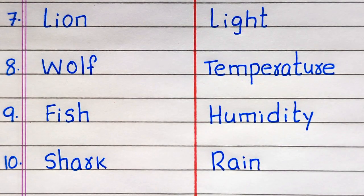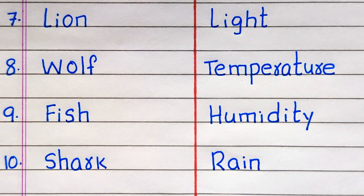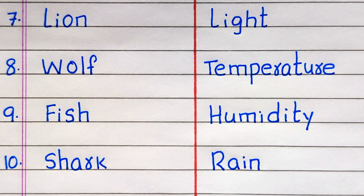Seventh example of a biotic factor is Light, Temperature, Humidity, Rain.